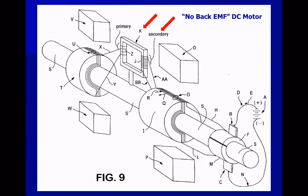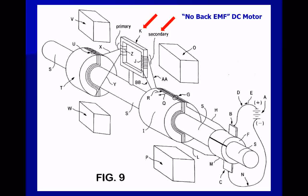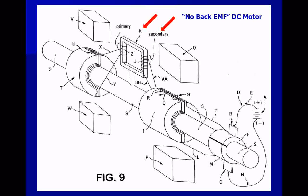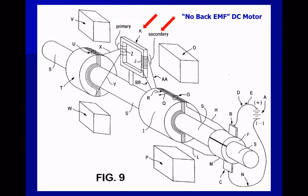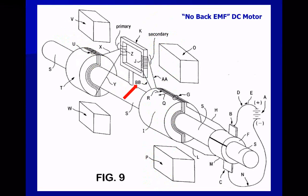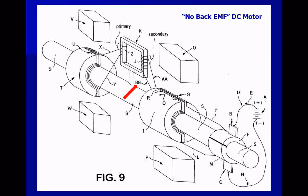Conductor J is wrapped beta number of turns around the cancellation transformer K's core, where beta is any integer greater than or equal to 1. These beta number of turns make up the secondary of cancellation transformer K. The other end of conductor J is connected to one end of conductor BB, and the other end of conductor BB is connected to the other terminal.